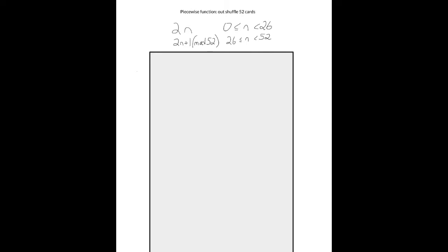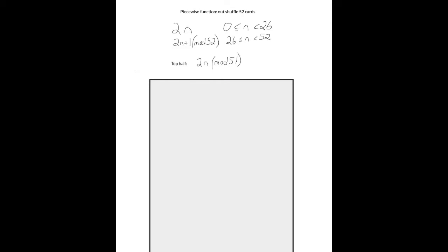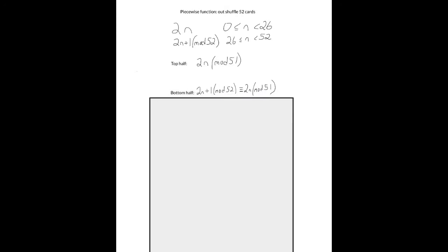The problem was that we were trying to come up with a formula that included a variable representing the number of shuffles required to bring the deck back to its original order. This was not possible if we left our functions as piecewise — the key was to write one expression instead of two. For an out shuffle, the top half is 2n and the bottom half is 2n plus 1 mod 52. In order to make this expression the same, for the top half we can change our expression to 2n mod 51, since n is less than 26, so 2n will never reach or exceed 51. It turns out that 2n plus 1 mod 52 has the same remainder as 2n mod 51 for every value of n except for factors of 51 — in this case, just 51. So we can use mod 51 for both the top and bottom half, and our function is no longer piecewise: no matter where the card is, the next position is just 2 times the previous position mod 51.